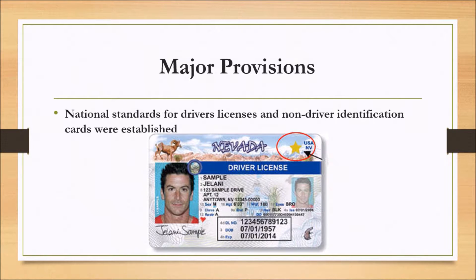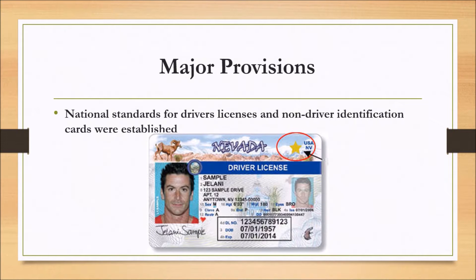Because unauthorized immigrants are not eligible, special requirements must be met by the state. The state must require evidence of lawful status, and with this a person may become eligible for a temporary driver's license or ID card. However, the individual must be able to provide verification of their documents. To meet the other requirements, the state must adopt 13 key practices when issuing driver's licenses and ID cards.